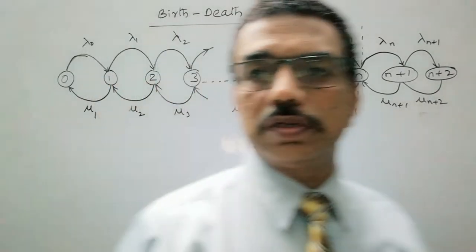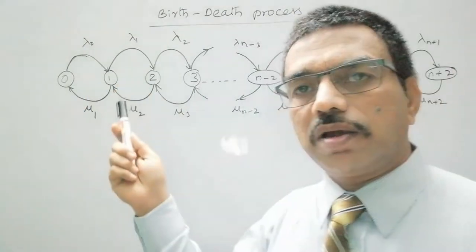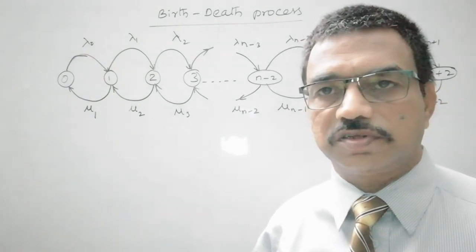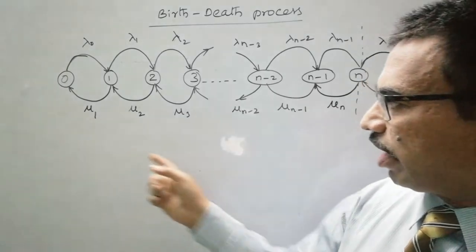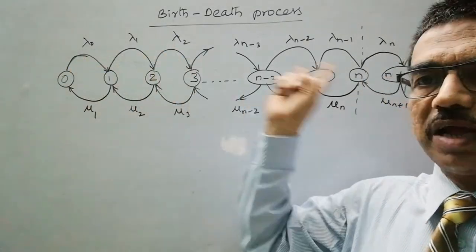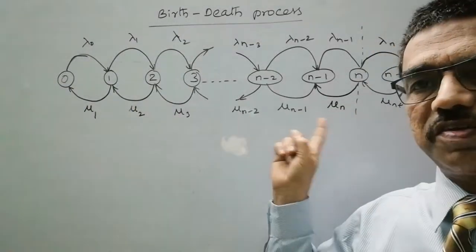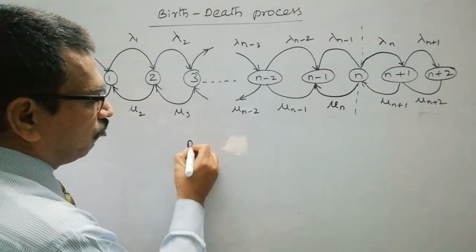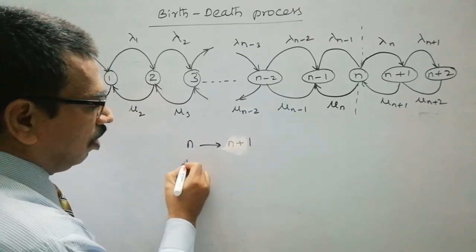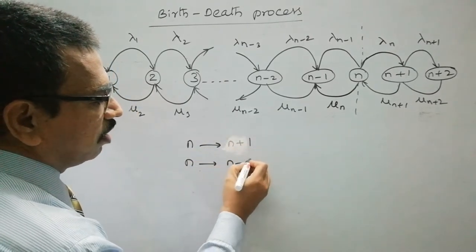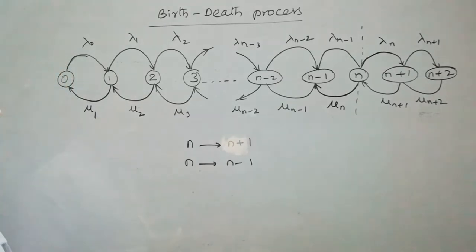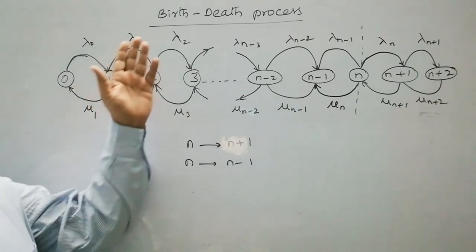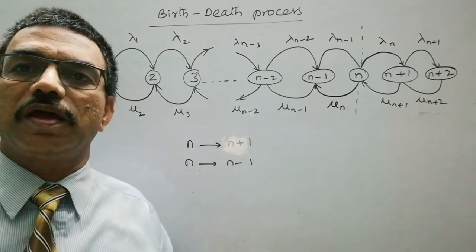For Assumption 3: the random variables according to which a new arrival or new service completion — that is, a birth or death — takes place are independent. The series of random numbers for inter-arrival times and the series of random numbers for service times are independent. So the state may reach from n to n+1 with a birth, or n to n-1 with a single death. These are the three assumptions on which the birth and death process is based.